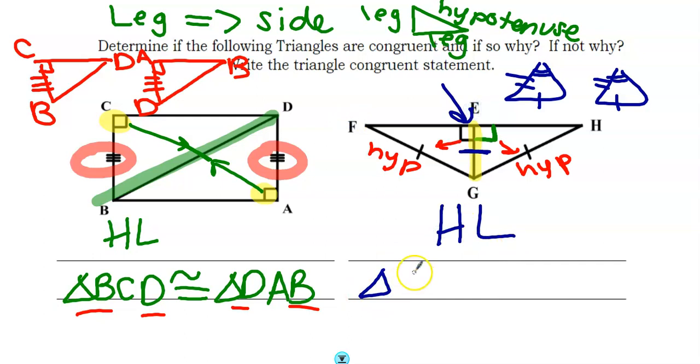So F-E-G, so triangle F-E-G is congruent to F-E-G goes with H-E-G. So triangle H-E-G. Those are my triangles and I proved it by using H-L.